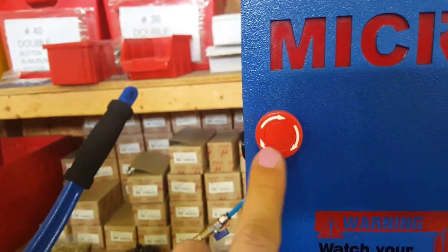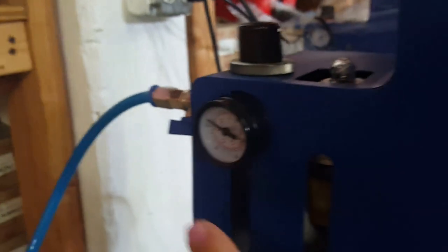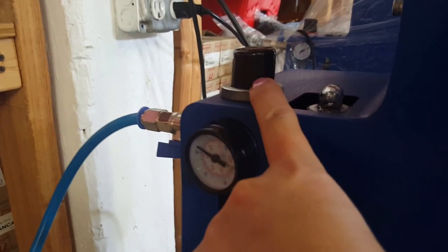Then we have the emergency stop button. That right there is the pressure gauge to adjust your pressure.